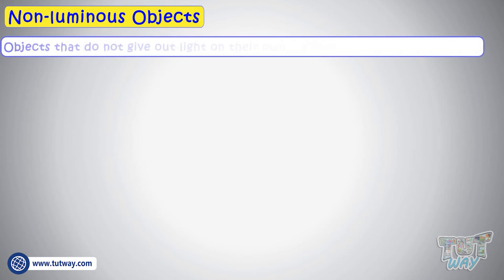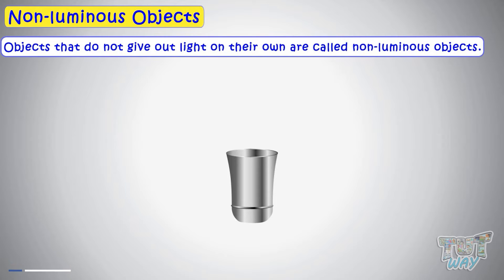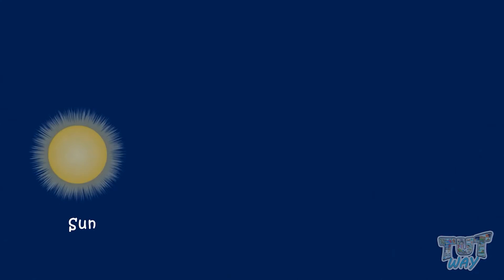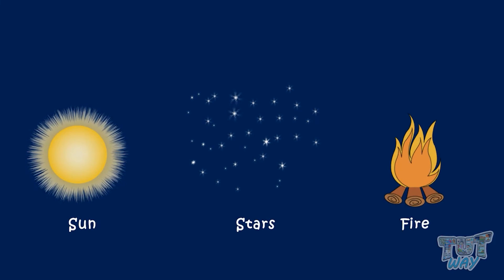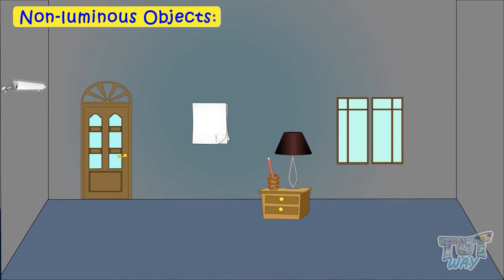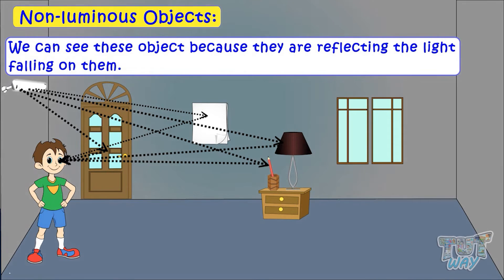Now let's see non-luminous objects. Objects that do not give out light on their own are called non-luminous objects. Like this glass — it does not emit or give out light of its own, but it is reflecting the light falling on it, because of which we can see it. So it's a non-luminous object. Some objects emit light of their own and are luminous, while others do not emit any light of their own and are non-luminous. We are able to see non-luminous objects because they are reflecting the light falling on them from some other luminous source.